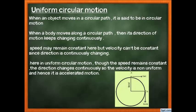A clock's hands are a good example. The speed of the hands is constant — if it weren't, the clock would sometimes run fast, sometimes slow. But the direction of the hands' tips continuously changes as they go around. So the clock hands exhibit uniform circular motion — constant speed, changing direction, hence accelerated motion.